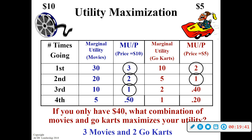A shortcut to this: your final combination is always going to have the same utility-per-dollar numbers. Whatever your final combination is, these two numbers are always going to be the same. In this case, with only two choices, it's either going to be two movies and one go-kart or three movies and two go-karts, because those are the only two combinations where these two numbers are the same.